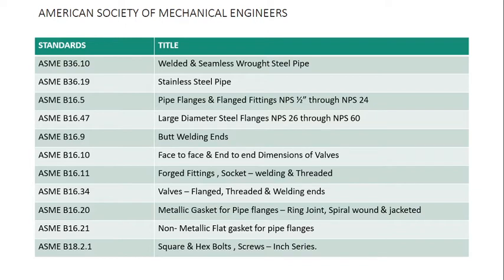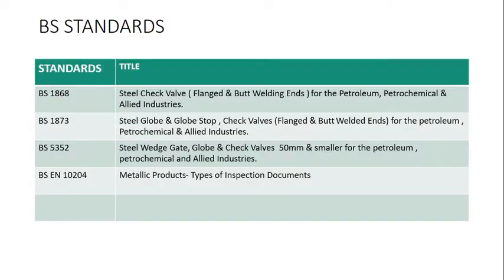This is the ASME standard — American standard. Now for British standards: BSEN10204 covers metallic products and types of inspection documents. BS-1868 covers steel valves for petroleum service. BS-1873 covers steel globe and stop valves.